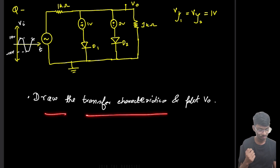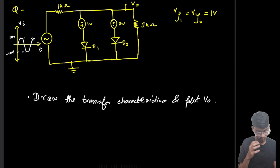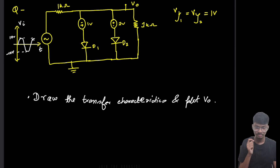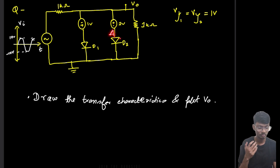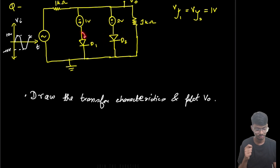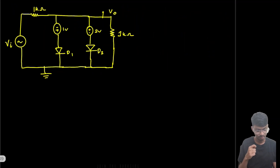The question asks us to draw the transfer characteristics and plot the output voltage. The first observation is that both diodes are connected in the same manner from anode to cathode. The positive terminal is connected to the anode of D1 and the negative terminal to the anode of D2, so D1 will turn on first since it is more positive.